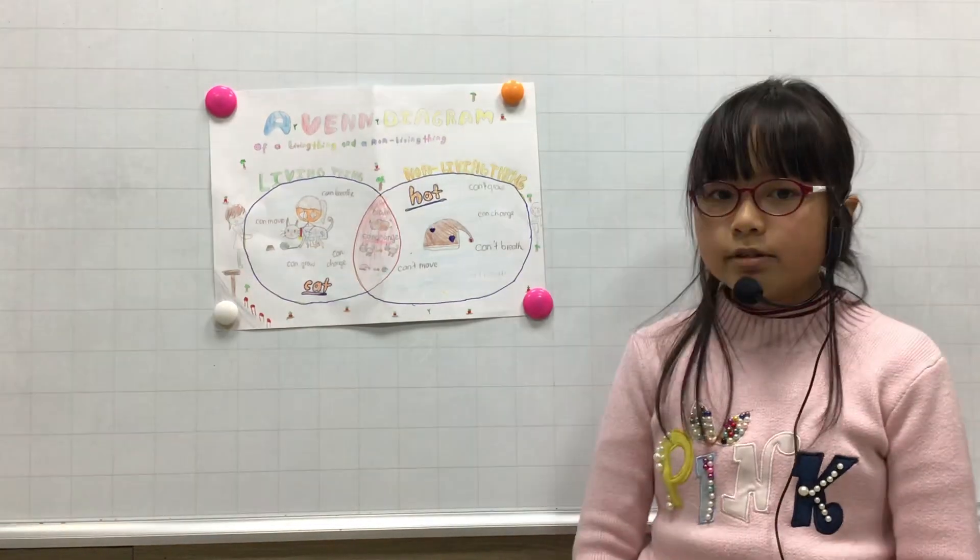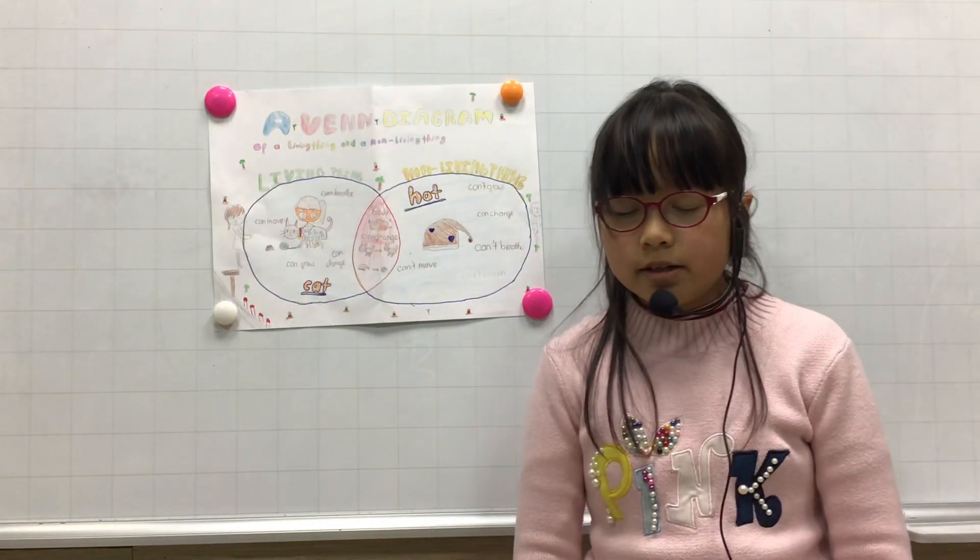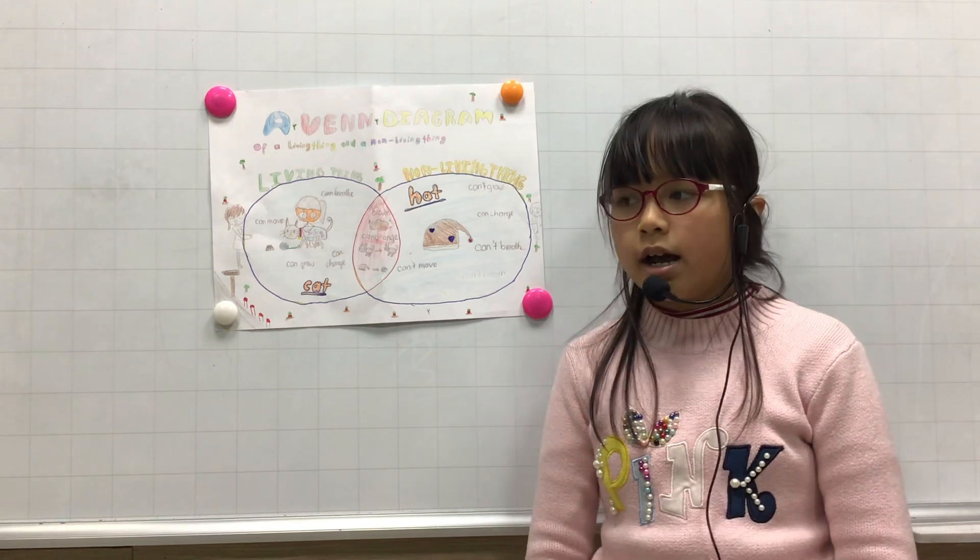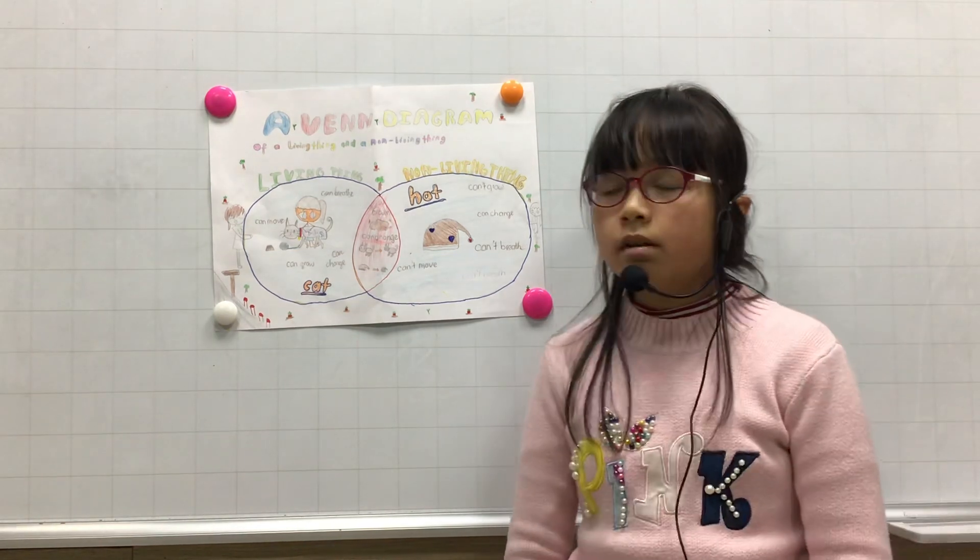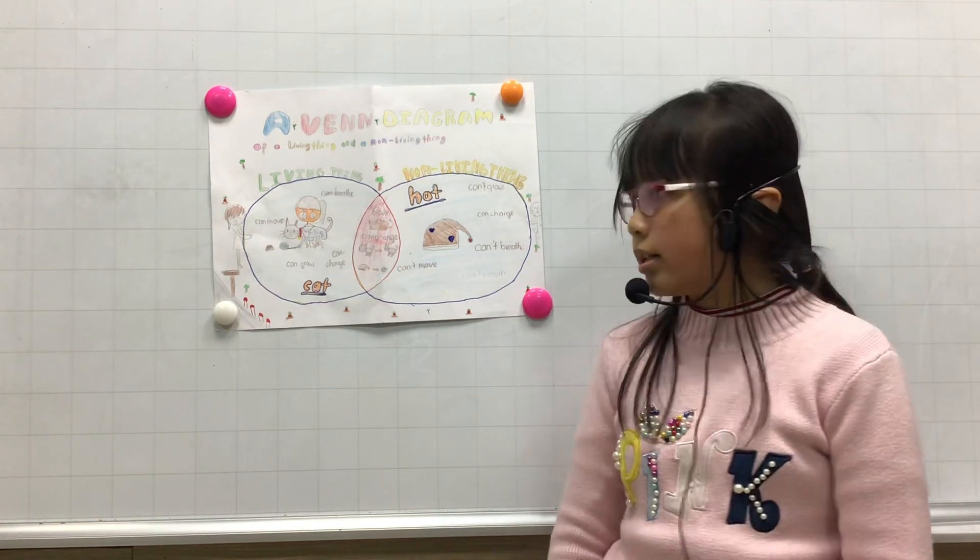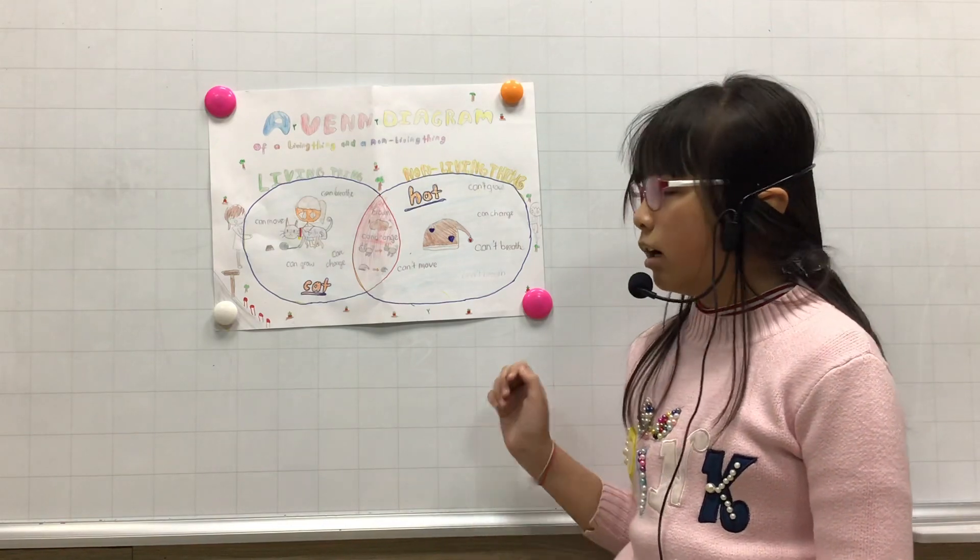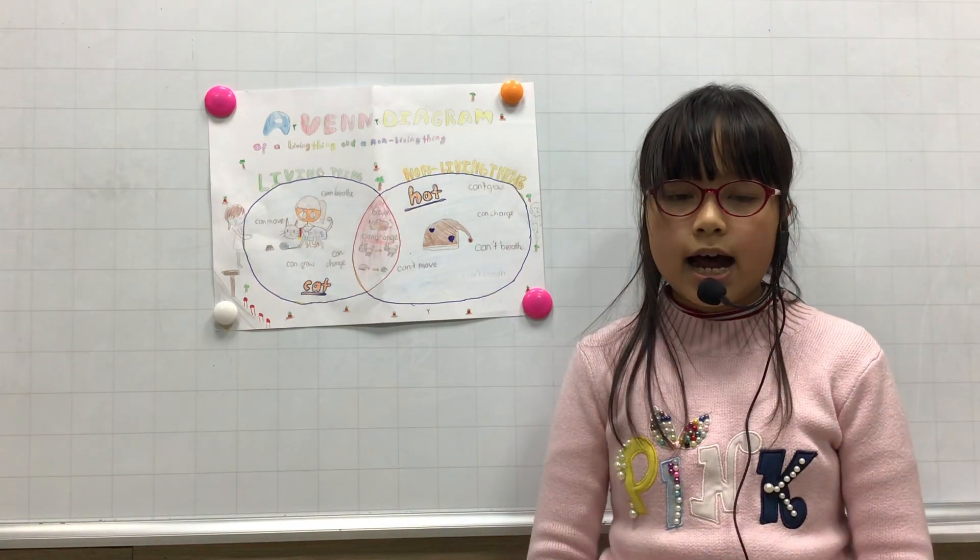This Venn diagram shows the difference between the non-living thing and the living thing. The living thing is a cat and the non-living thing is a hat.